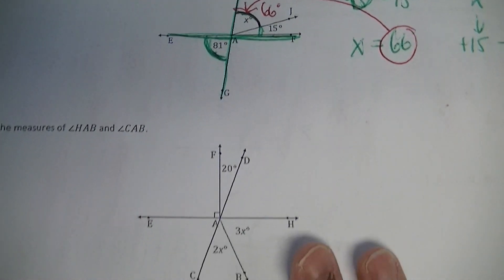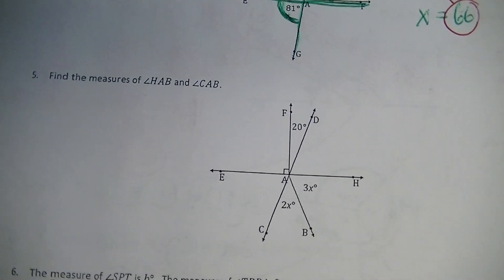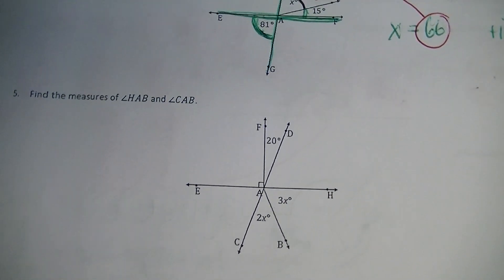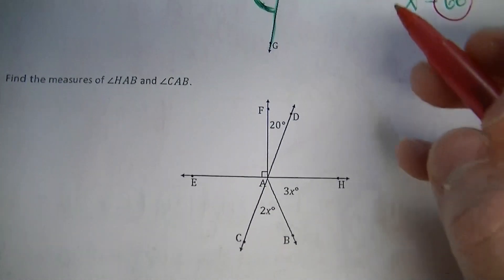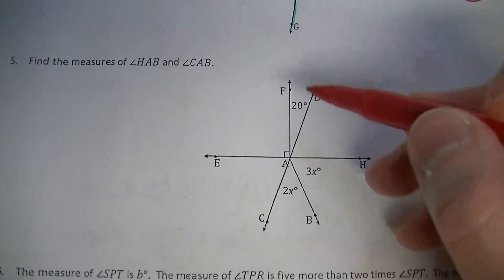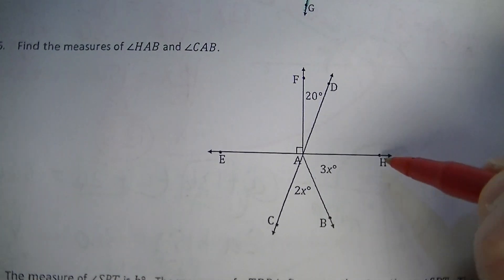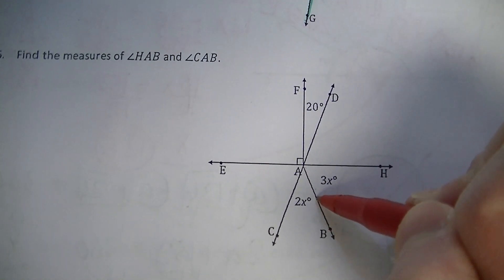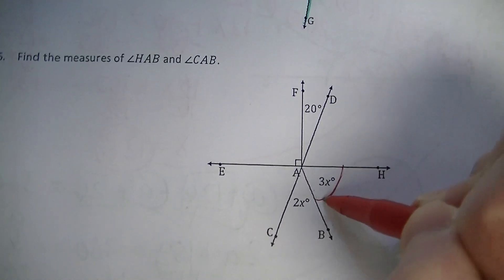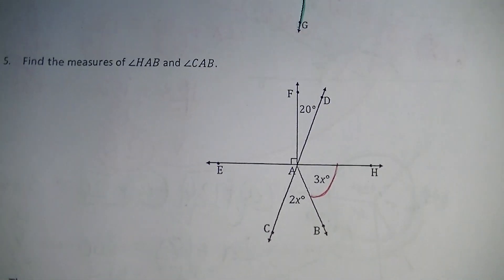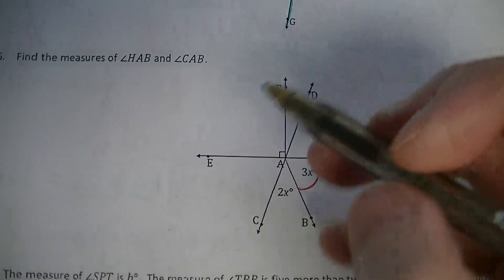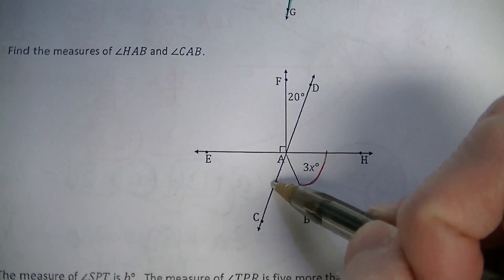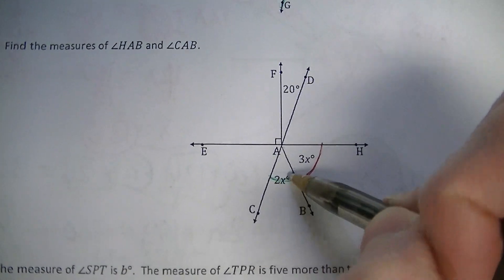All right, the next one. Find the measurement of angle HAB and CAB. I'm going to locate HAB — it's this angle right there. We have to figure out this angle measurement. And the other one, CAB — we have to figure out this angle measurement right there.